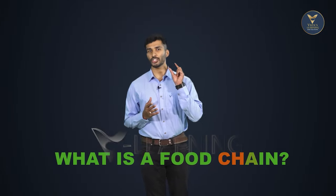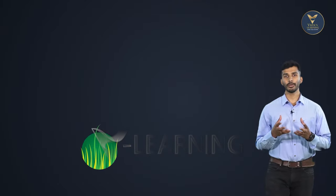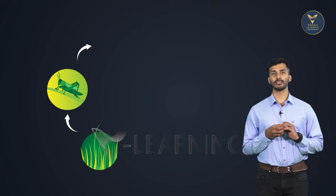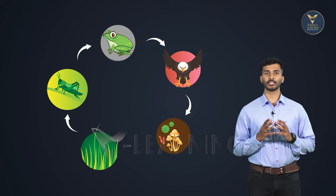I'm Manu, your Vista tutor, and welcome to Vista Learning. So what is the food chain? You have the word 'chain' in it — so what does a chain look like? It has many small links connected to one another. Coming to food chain, it's not metals that are connected, but it's food.